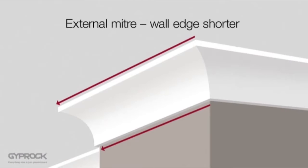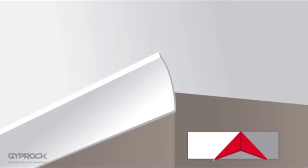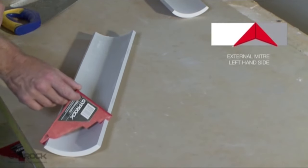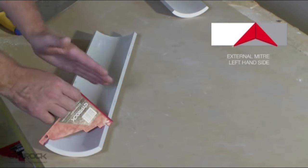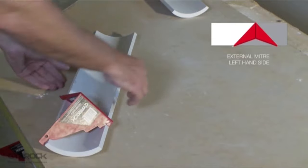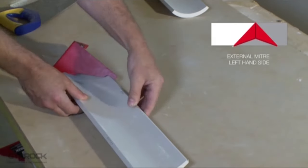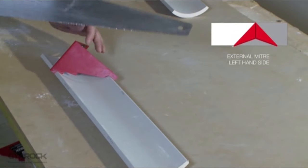External angle mitres are just as easy but you need to remember that now the wall edge length is shorter. We'll start with the left side of an external angle mitre. For this we'll cut along the left side of the mitre master and this time we're cutting away the piece we want to keep. Again you may choose to move your position to make it easier to cut.